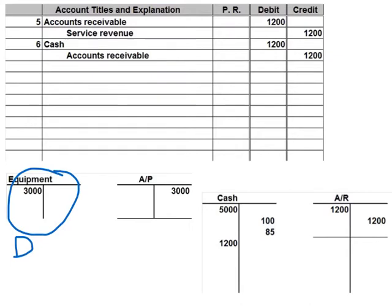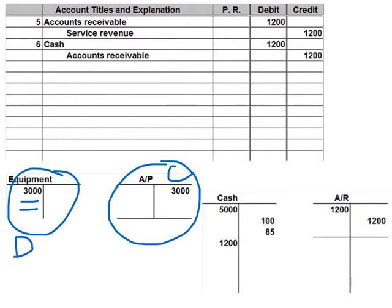We purchased that on account, so that was accounts payable. Accounts payable is a liability, and liabilities are credits. Back to number seven: we paid $3,000 cash for the equipment purchased in number two. Our equipment is already recorded — we do not need to touch equipment unless we sell it. We're paying for it, so we're dealing with our accounts payable account.